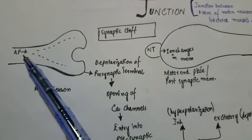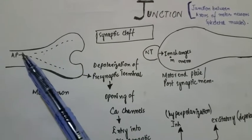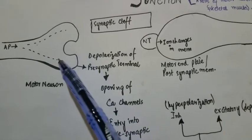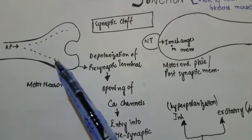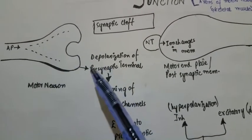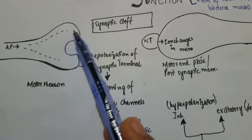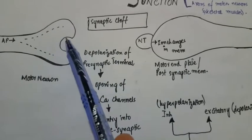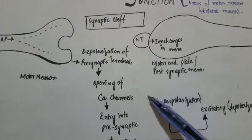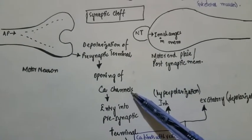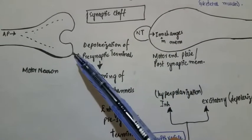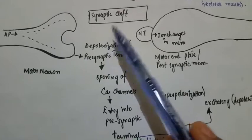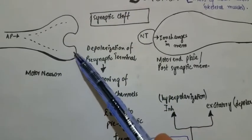When the action potential arrives at the presynaptic membrane, it leads to the depolarization of the presynaptic terminal. This depolarization leads to the opening of the calcium channels, and there is an influx of calcium from the synaptic cleft into the presynaptic membrane.